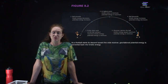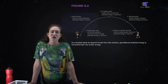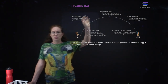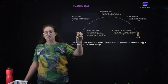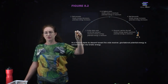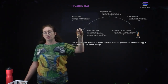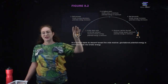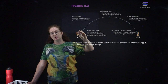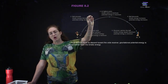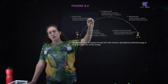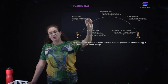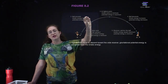The most easy to understand is gravitational potential energy. If you have a ball flying through the air, at the beginning, whoever kicks or throws it does some work on the ball, which gives it some kinetic energy. Then as it travels up in the air, gravity does work on the ball, so the ball is losing energy.